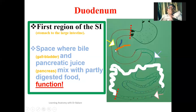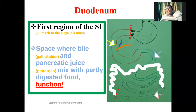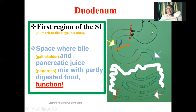The duodenum, apart from creating structural alignment for the GI tract, also creates a space through which bile and pancreatic juice are released. The bile is used for the emulsification of fat, which tends to further break down fats. Pancreatic juice contains enzymes — amylase, lipase, and trypsin — and helps to completely digest carbohydrates, proteins, and also fat. The food coming out from the stomach is partially digested until it gets to the duodenum, where these secretions are released to completely digest food substances so that absorption can take place.